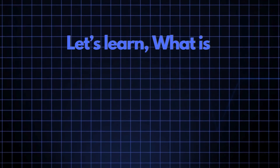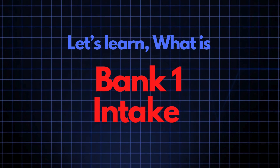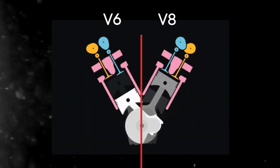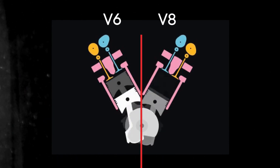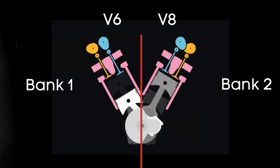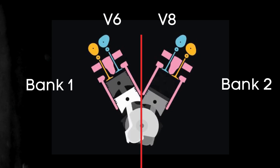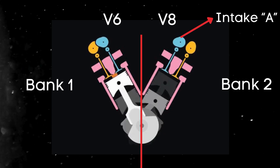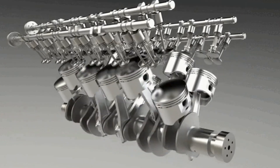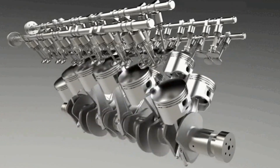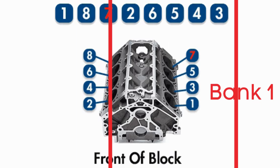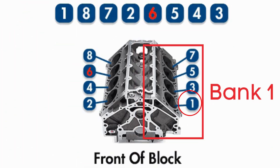Now let's learn what bank 1 intake camshaft is. In the case of V6 or V8 engines, there are two camshafts: bank 1 and bank 2. For dual overhead camshaft DOHC engines, there are two camshafts per bank — intake and exhaust. The intake camshaft controls the opening and closing of the intake valves. Bank 1 typically refers to the side of the engine where cylinder 1 is located.